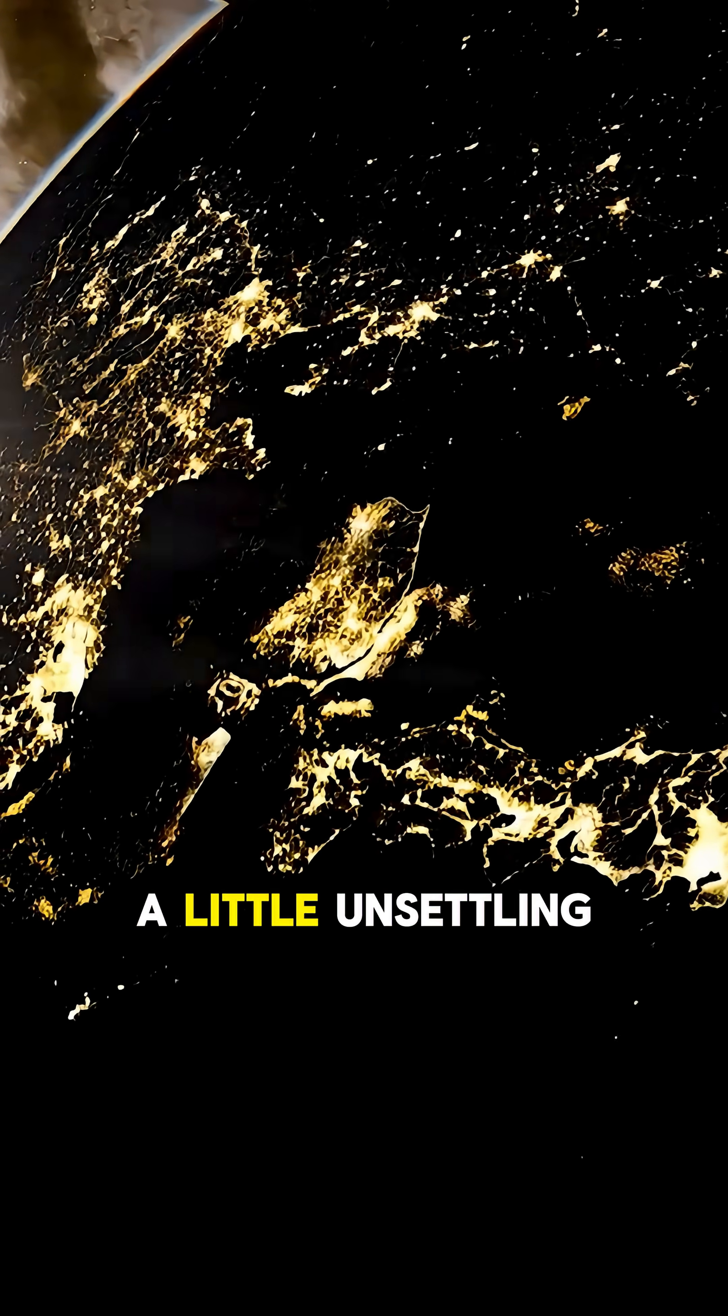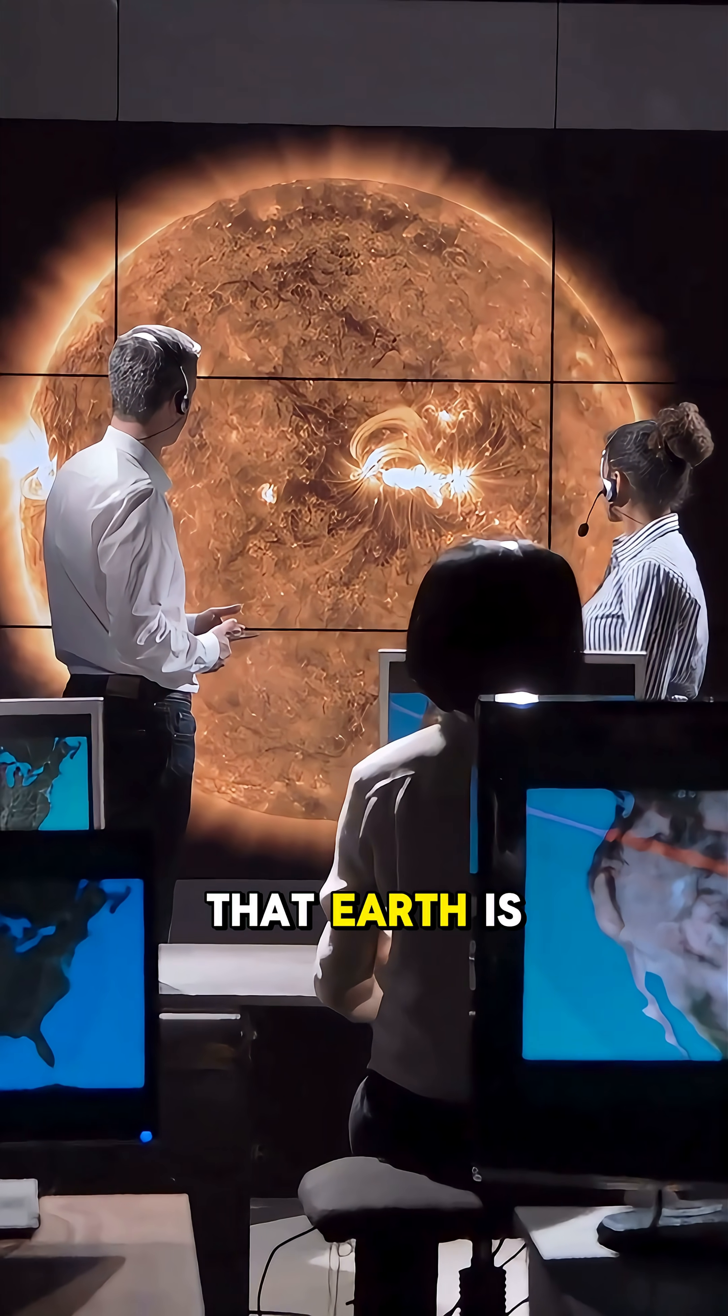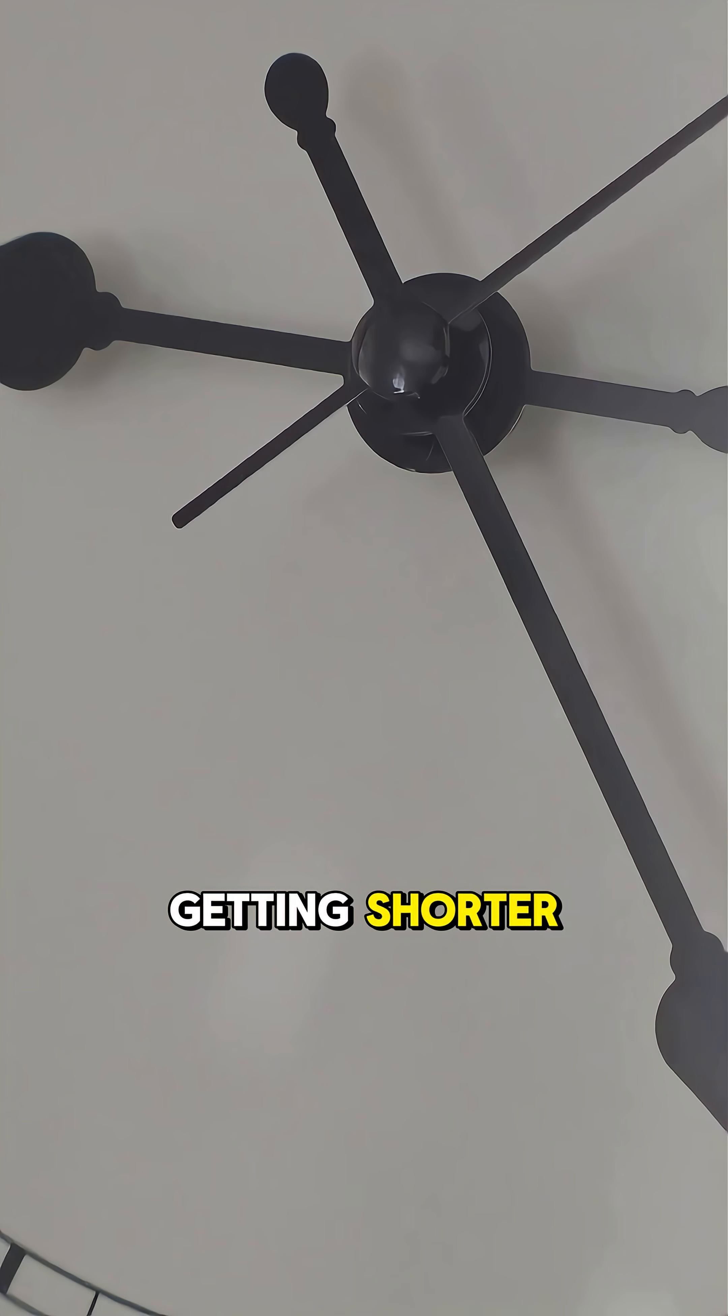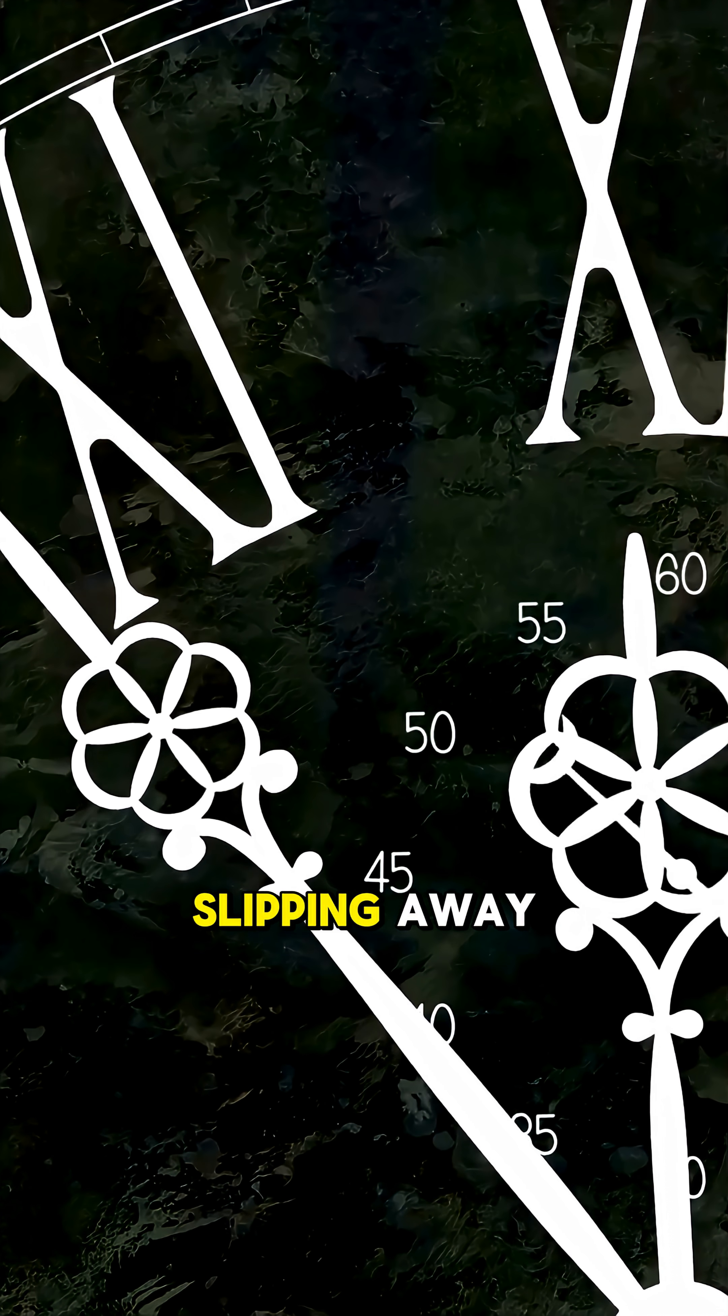Something strange and a little unsettling is happening to our planet. Scientists have discovered that Earth is now rotating faster than before and the result? Our days are getting shorter. Yes, you read that right. Time is literally slipping away.